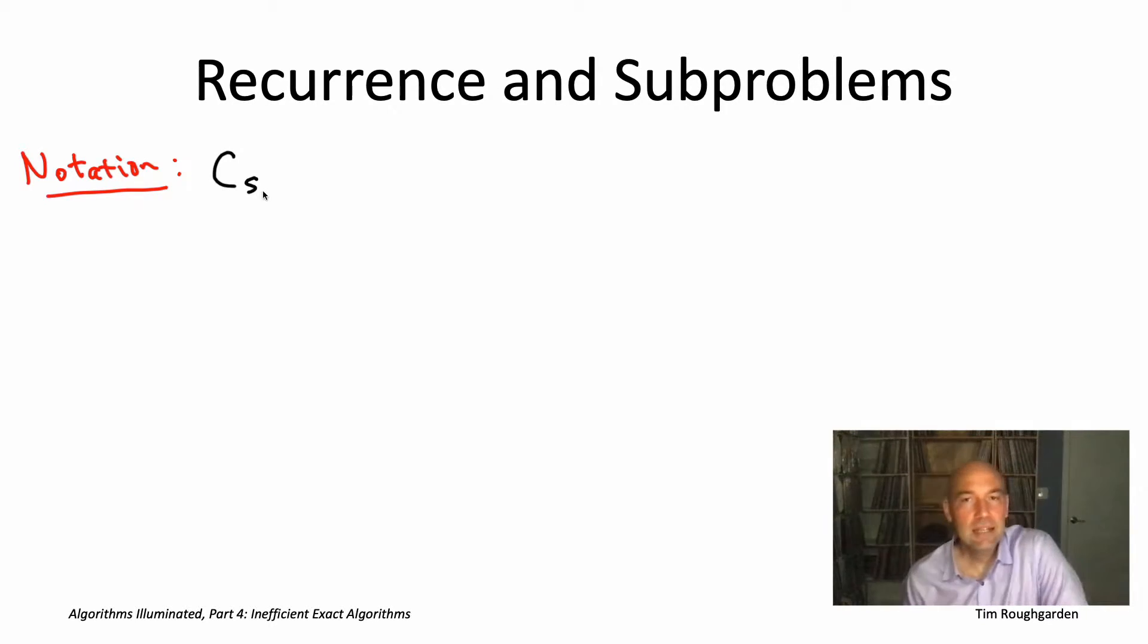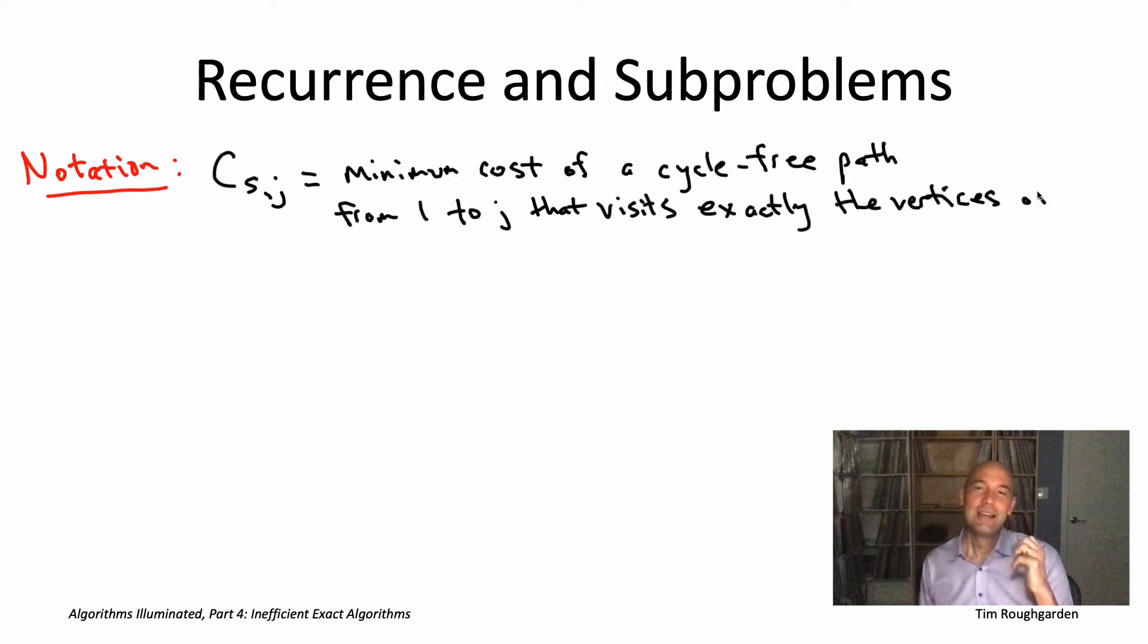By capital C subscripts capital S comma j, I'm going to mean the minimum cost of a path that satisfies the following four properties. Number one, the path should start at vertex one. Number two, the path should end at the vertex j. Number three, the path should be cycle free, so it doesn't visit any vertex more than once. And number four, the vertices that it visits exactly once should be precisely the vertices in the set capital S.